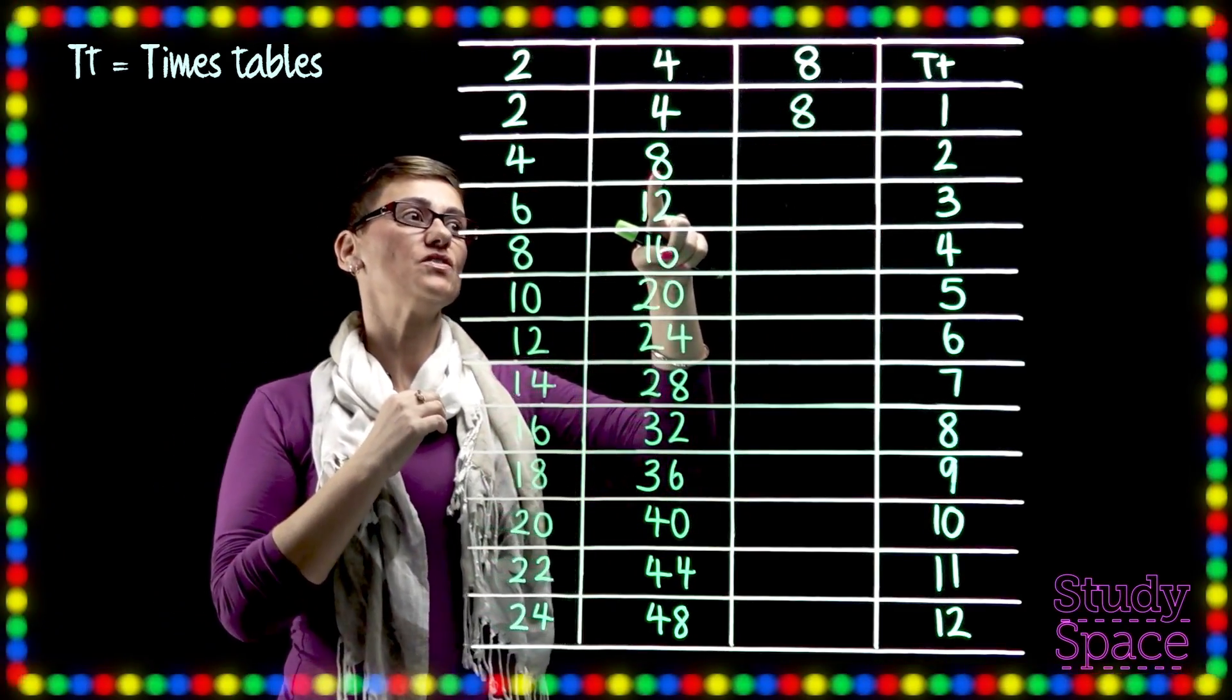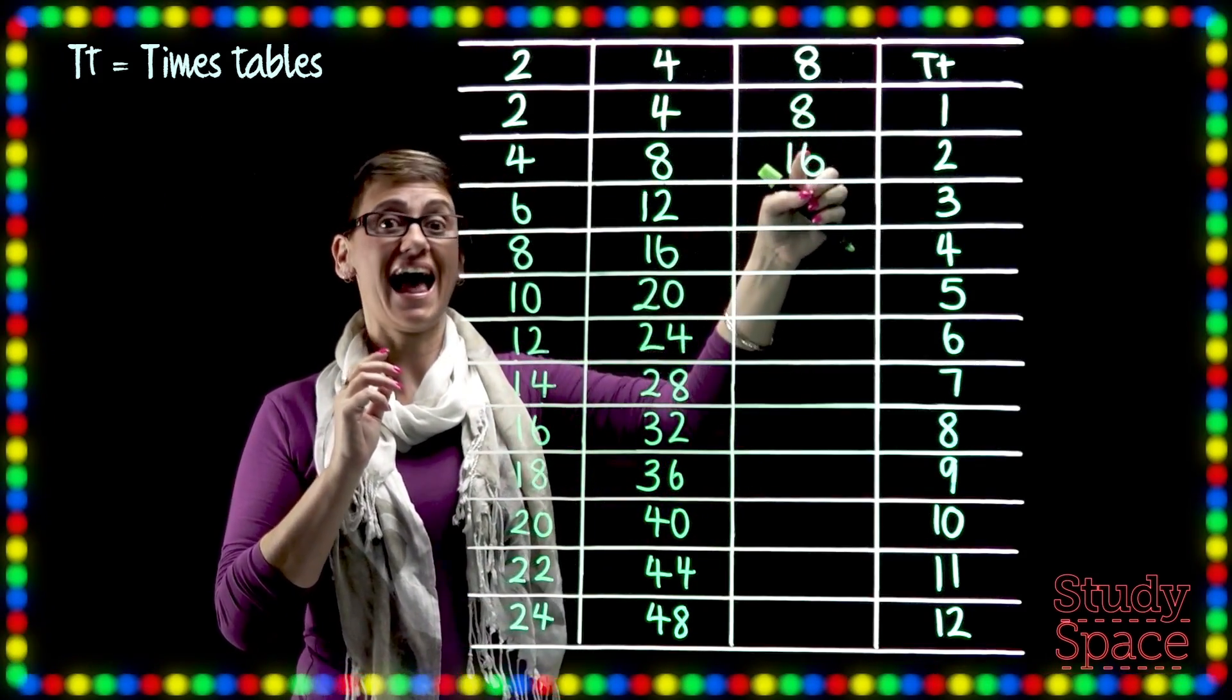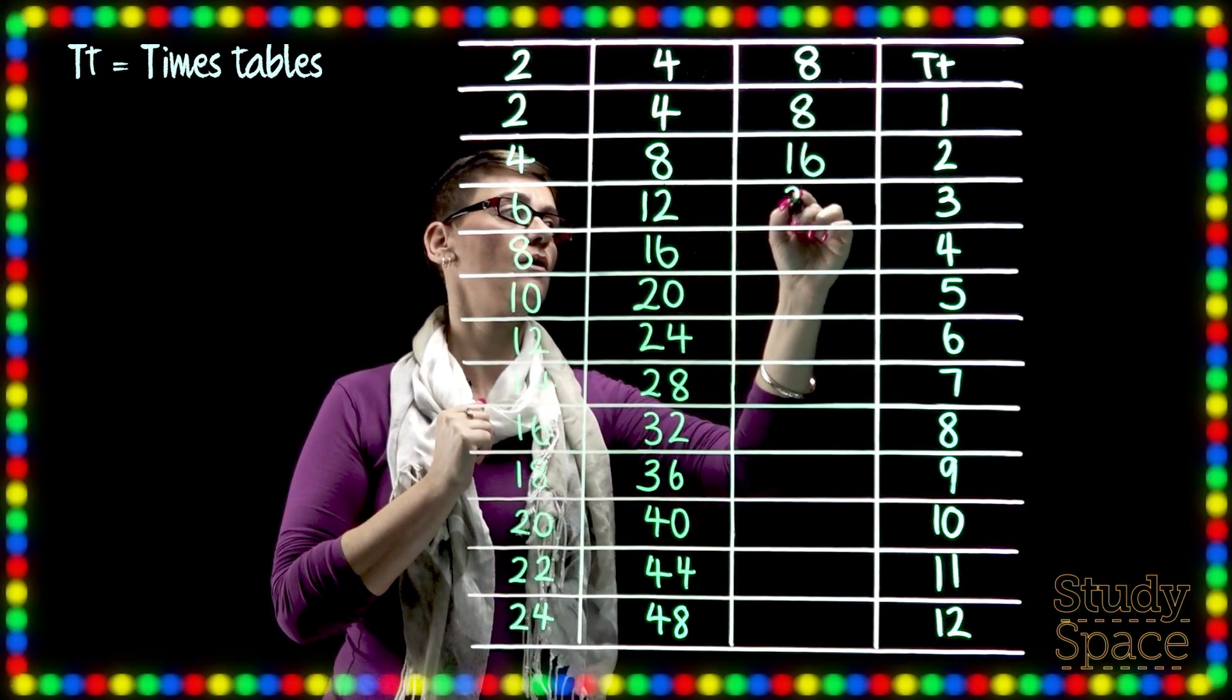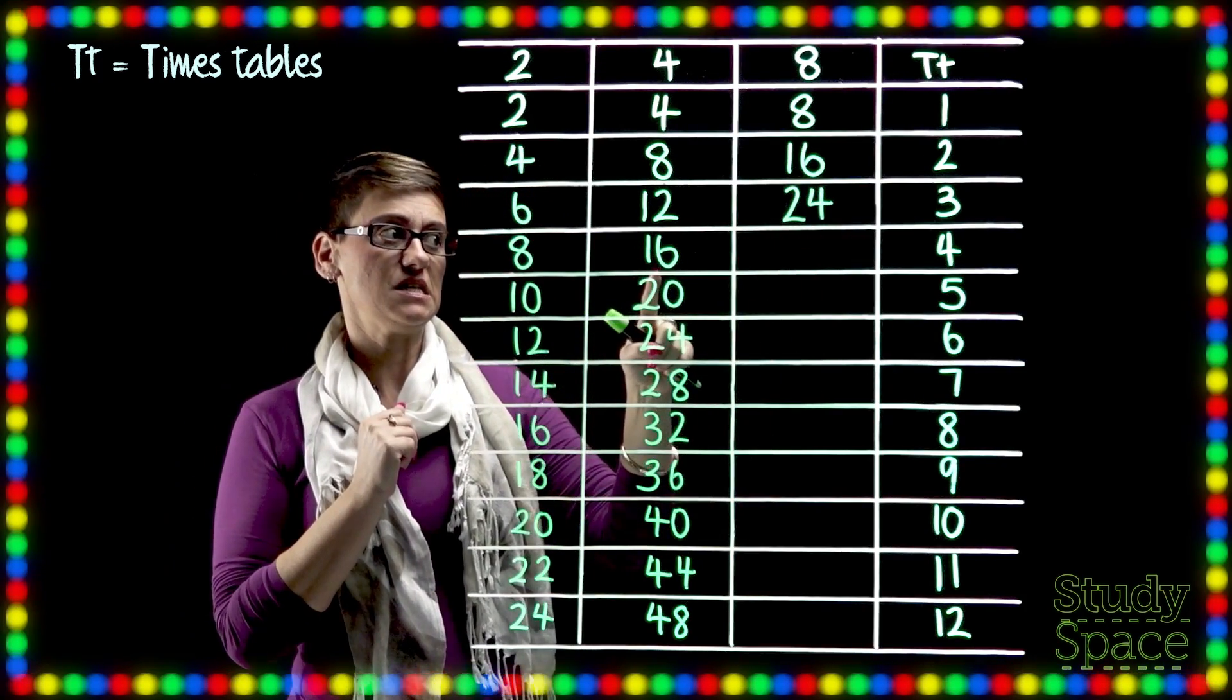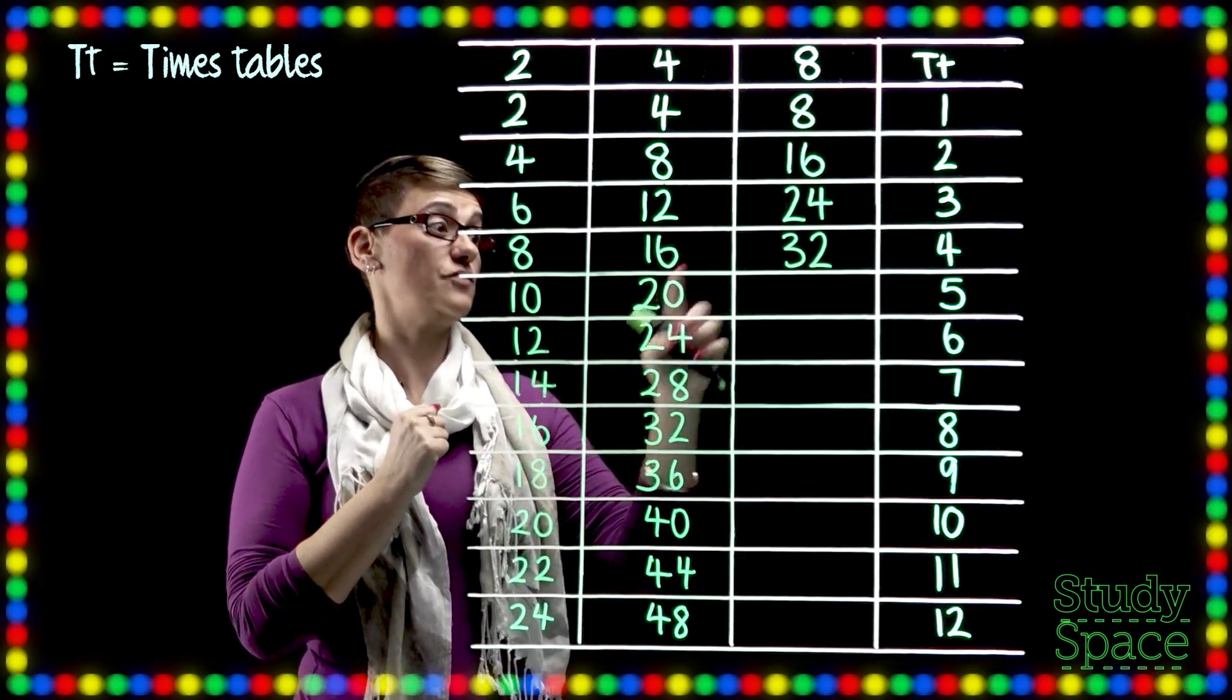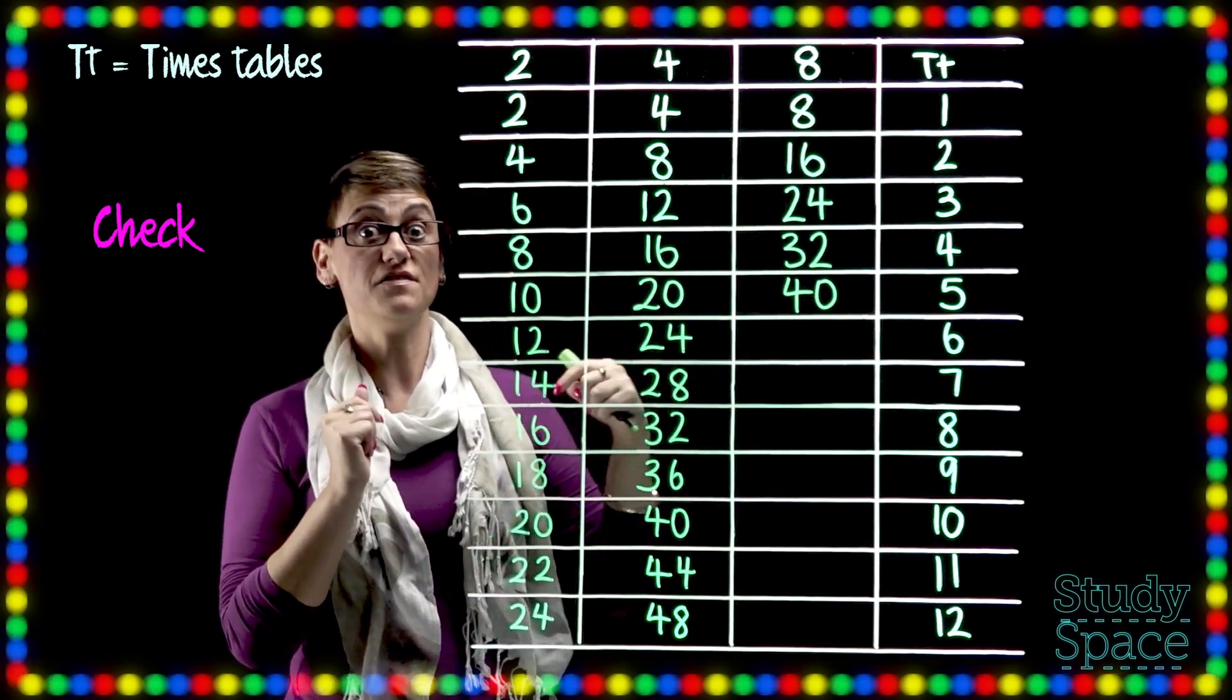Then we've got 2 8's or double 8 which is 16. Remember we're adding 8 every time. Now double 12 is 24. Double 16 is 32. Double 20 is 40. No yes 40. So we can quickly check this. 8 times 5.